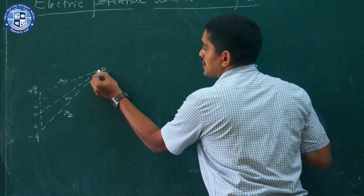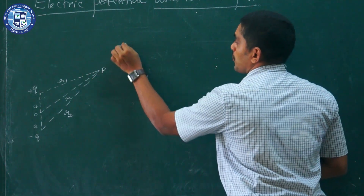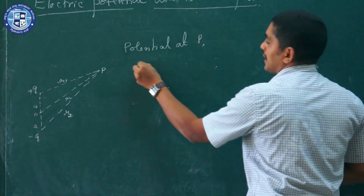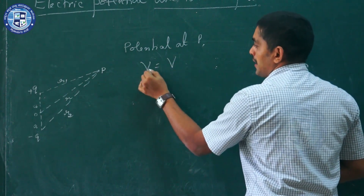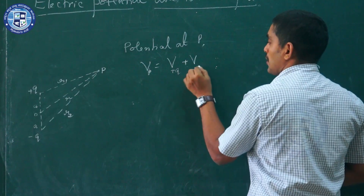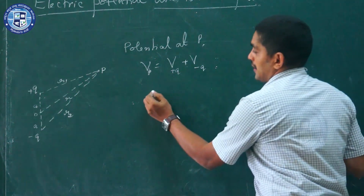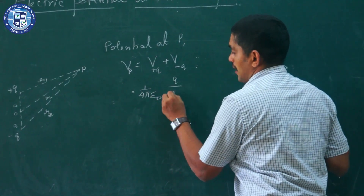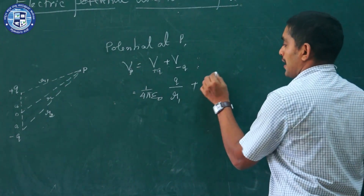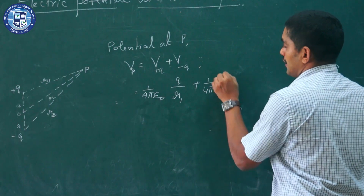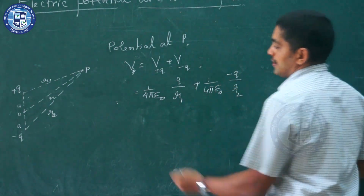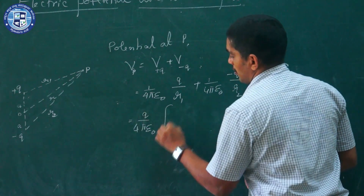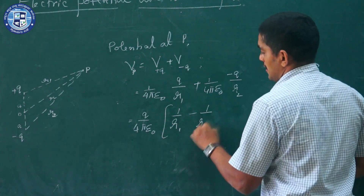We want the potential at point P. Since the potential is a scalar, the potential at P — V at P — is due to the potential from the positive charge and the potential from the negative charge. I can write it as: 1 over 4π ε₀ times Q over R1, plus 1 over 4π ε₀ times (−Q) over R2. Simplifying, this becomes Q over 4π ε₀ times (1/R1 − 1/R2).